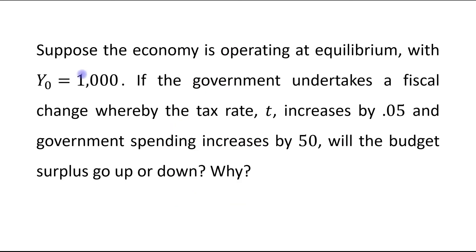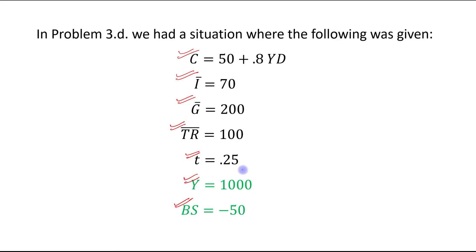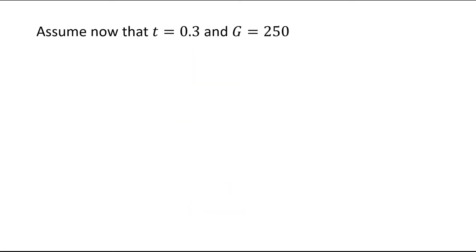Now in the question we have given that if the government undertakes a fiscal change whereby the tax rate t increases by 0.05, this will become 0.30, and government expenditure is increased by 50, so this will become 250. So we can write: assume now that tax rate is 0.3 and government expenditure is 250.